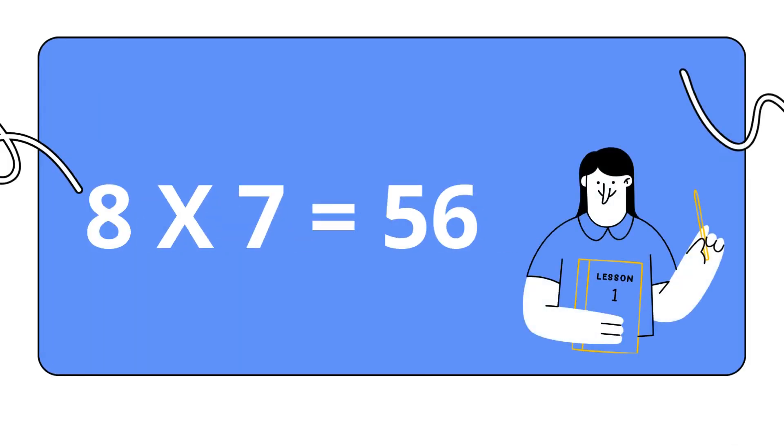Eight sevens are fifty-six. Eight sevens are fifty-six. Eight eights are sixty-four. Eight eights are sixty-four.